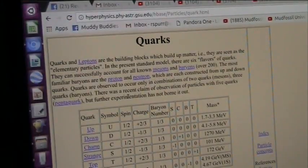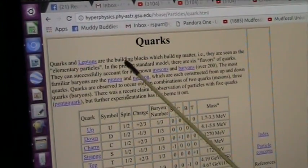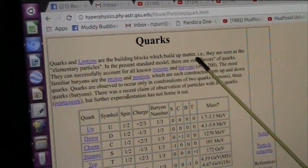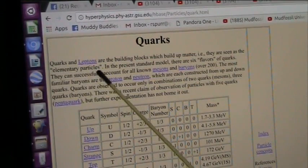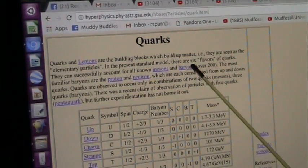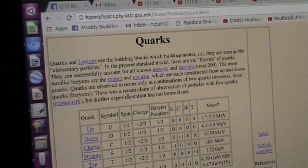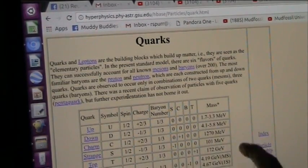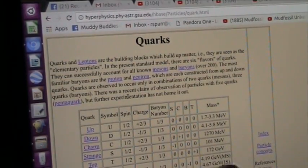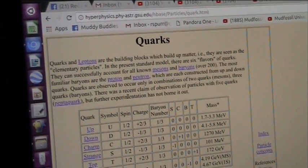If you go a little further, quarks and leptons are the building blocks which build up matter. They're seen as the elementary particles in the present standard model. There's six flavors of quarks, and then they go down to up, down, charm, strange, top, bottom, all these kinds of things. I mean, to me, it's crazy things. But that is a detail that they want to go into. They can come up with all the different little electron volts and all that business. That's not my range.